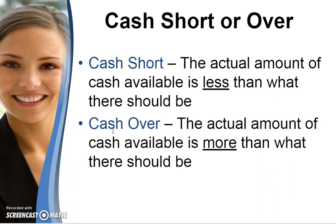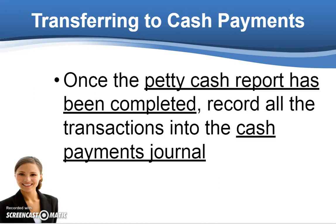But a lot of times people simply make mistakes — they might fill out the petty cash slip incorrectly, take a little too much money, not take enough, or throw some change back into petty cash. There are a lot of reasons why the amounts would be off, and this allows the accountant to determine if there's a cash short or a cash over. Once you have filled out the petty cash report and replenished the money, you record that transaction into the cash payments journal. It makes sense because you are paying cash back to the petty cash fund — so it's a cash payment. In the next video we will talk about how to actually fill out the form and what the transaction for the cash payments journal looks like.